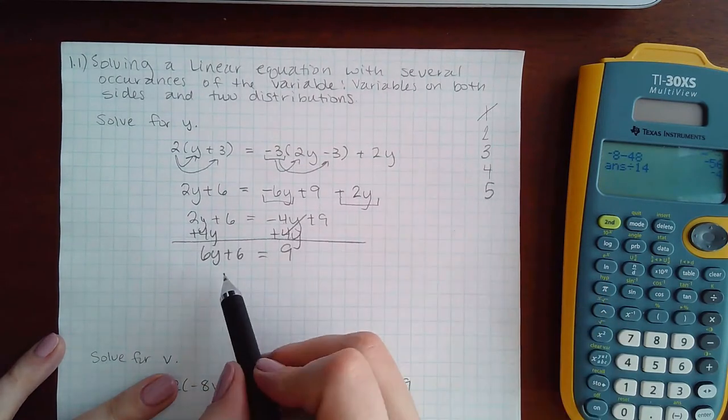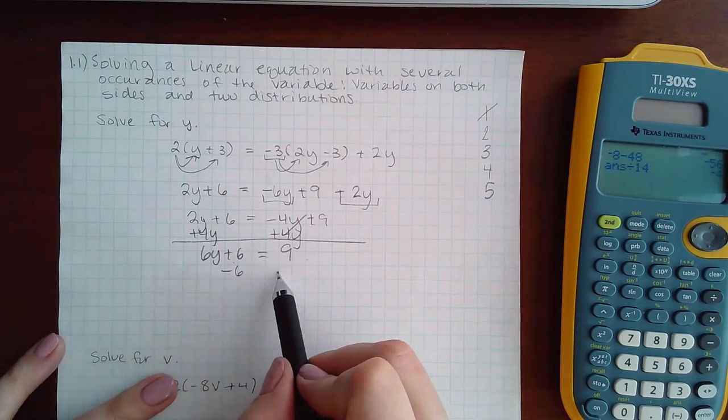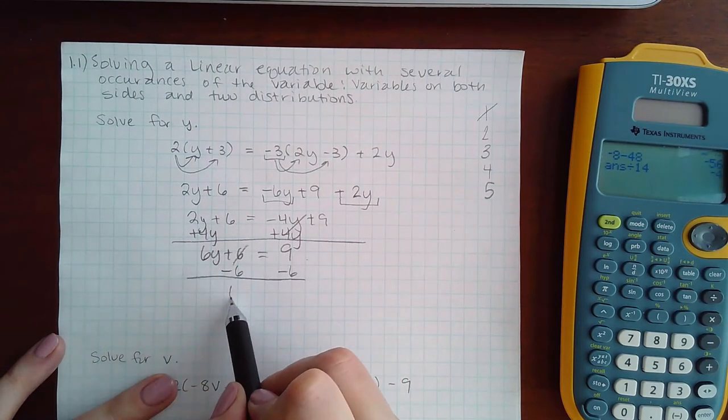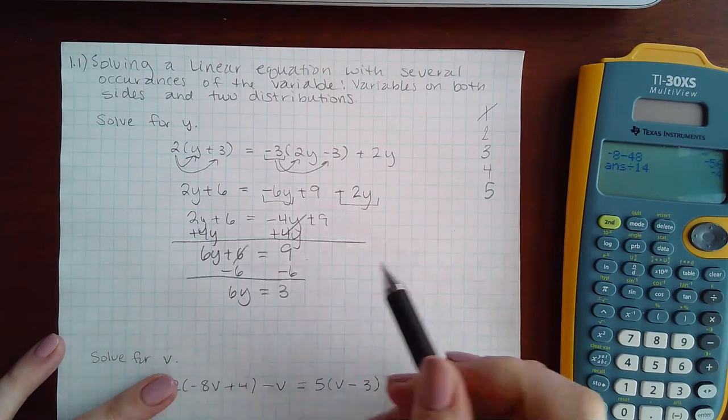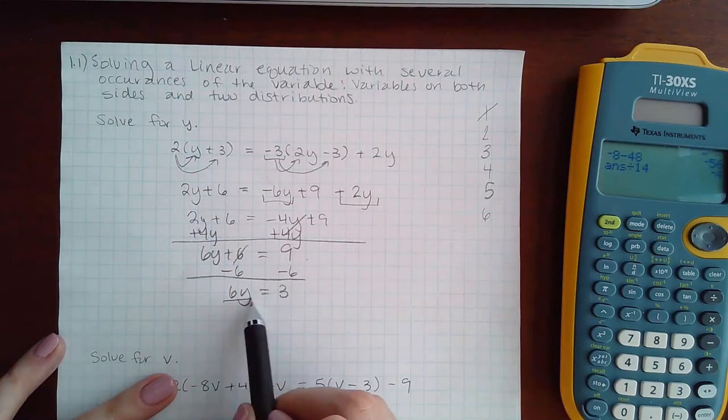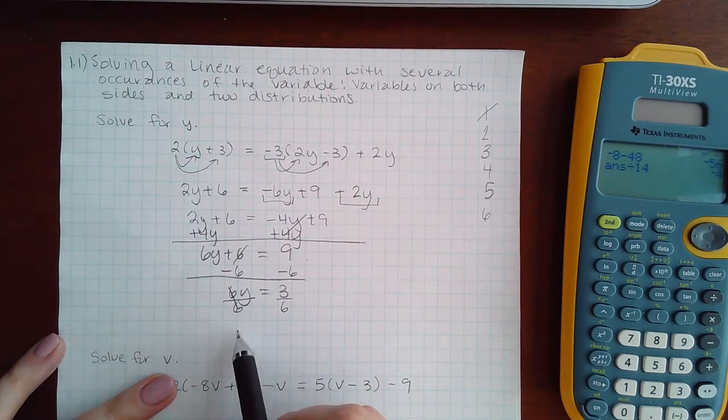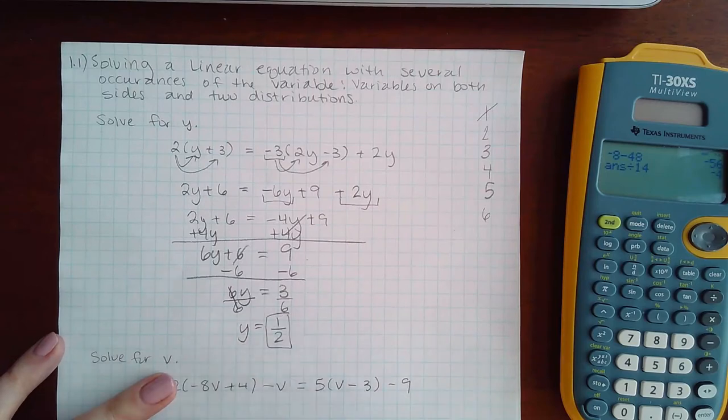Step five is to move the constant term to the right. And then the last step is to divide by the coefficient. And if you type this in your calculator it will reduce it down to one half.